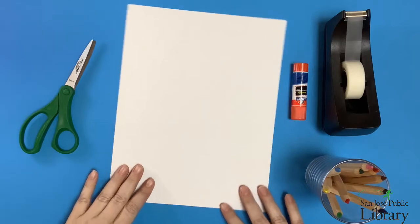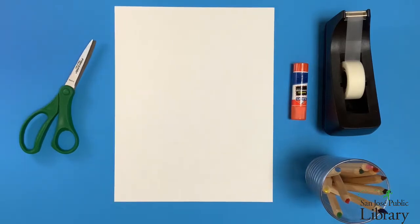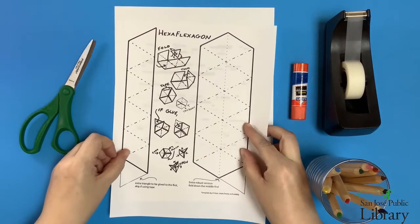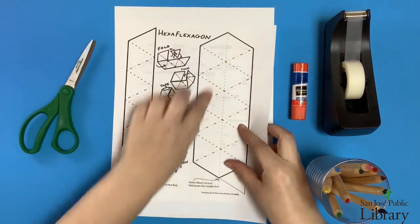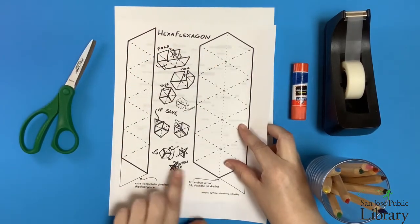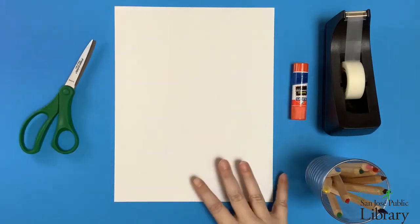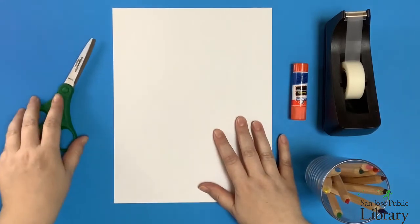For today's activity you're going to need a sheet of paper. You can print out a template for a Hexaflexagon. I'll provide a link in the description box below that gives you a one or two layered Hexaflexagon, but we're going to be using just a plain sheet of paper and I'll show you how to calculate it yourself.